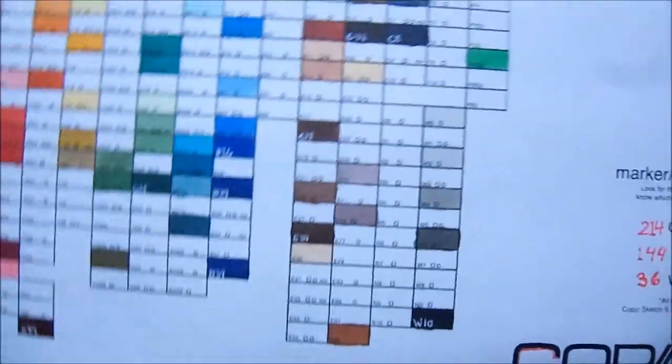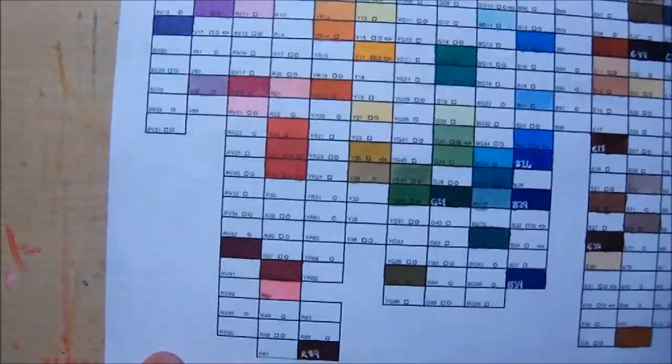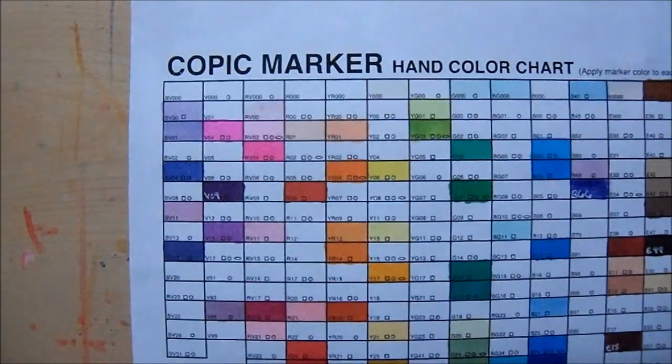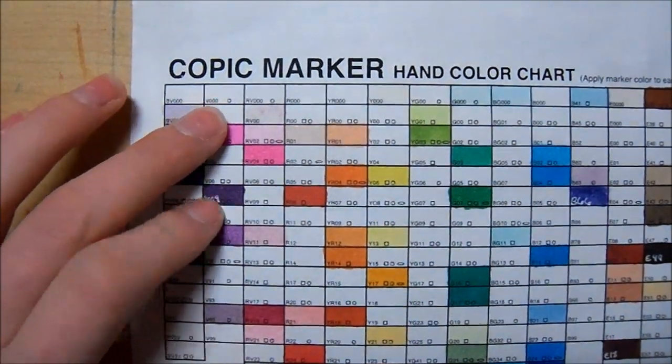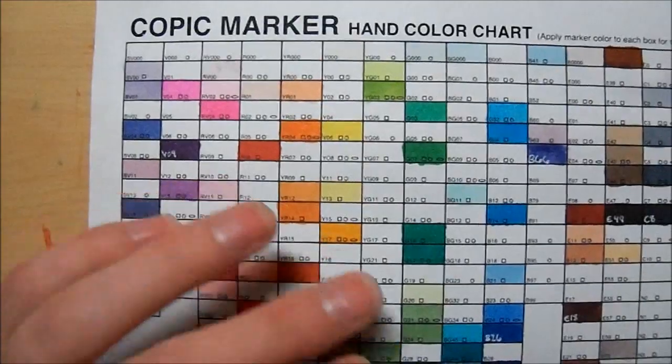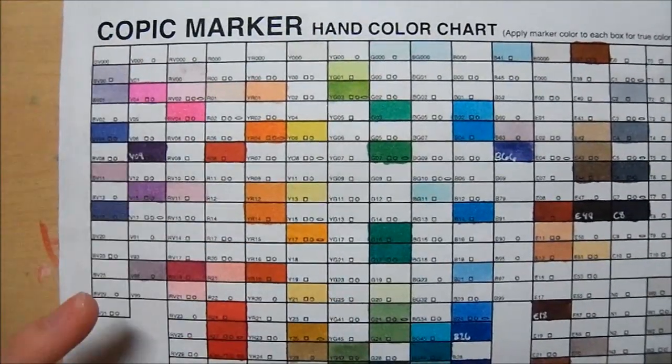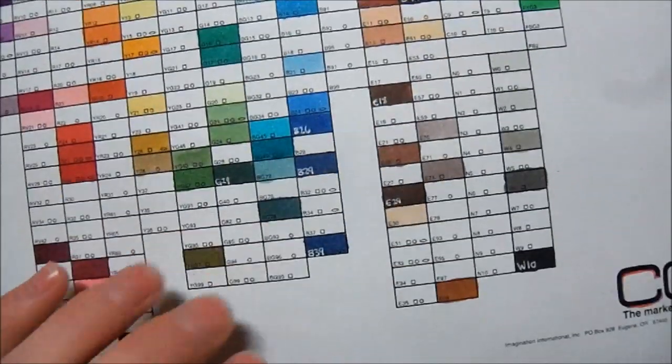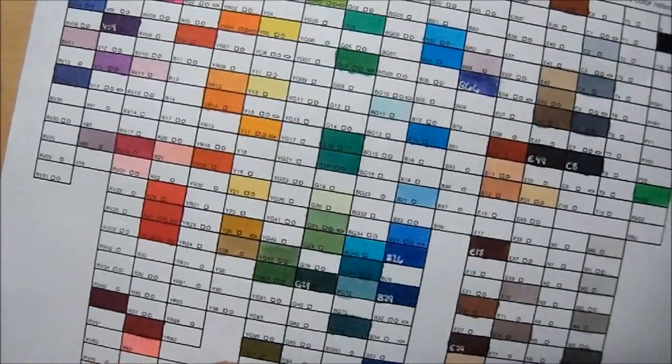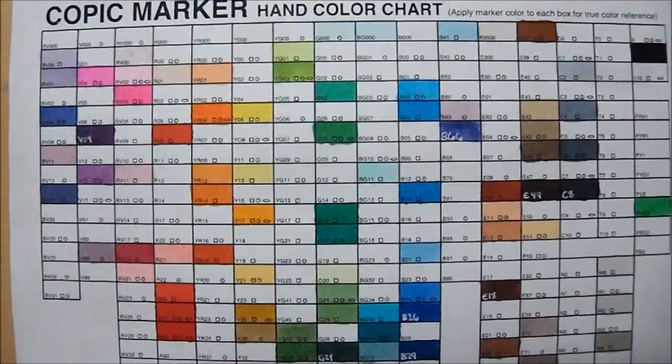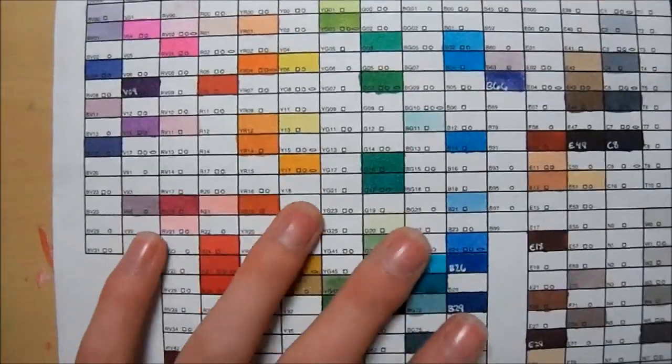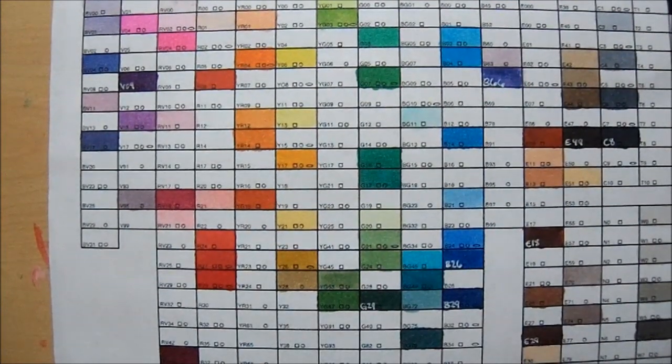You have to find new versions of it all the time though because they keep updating how many colors they have. This is the oldest version that they have printed out. It's just a blank chart that you fill your markers in. It's good if you have a lot of these printed out on the different types of paper you normally use.